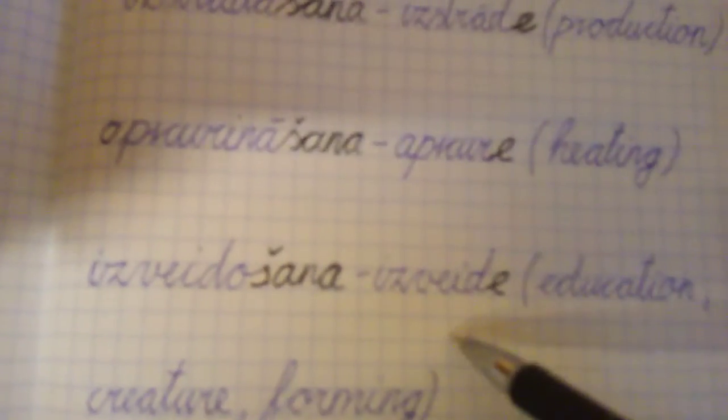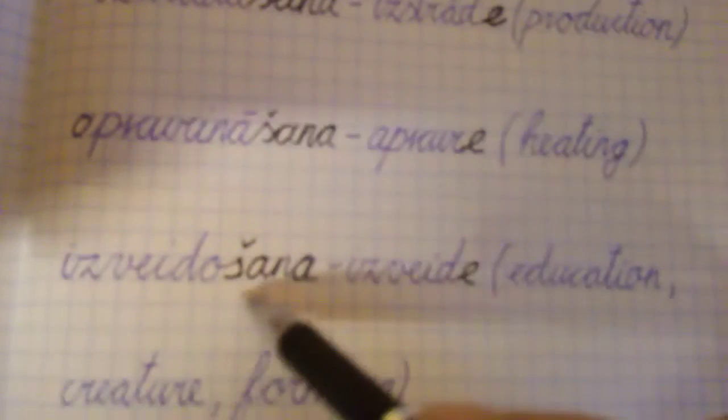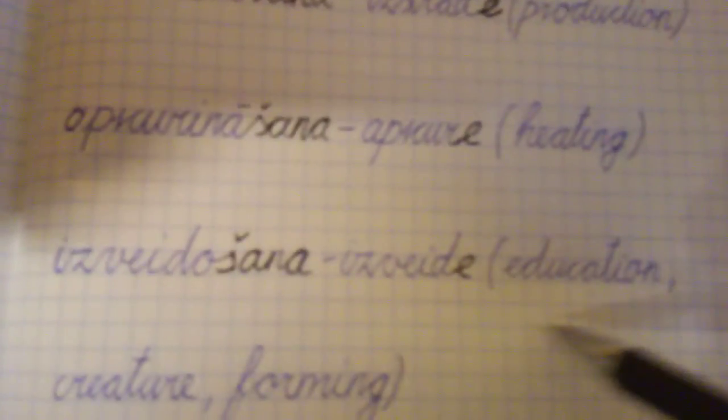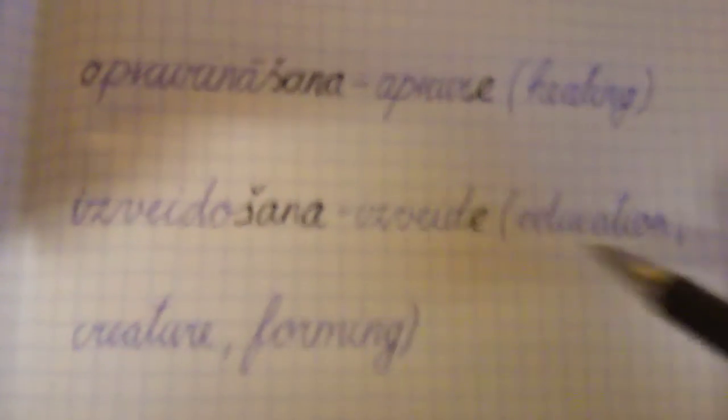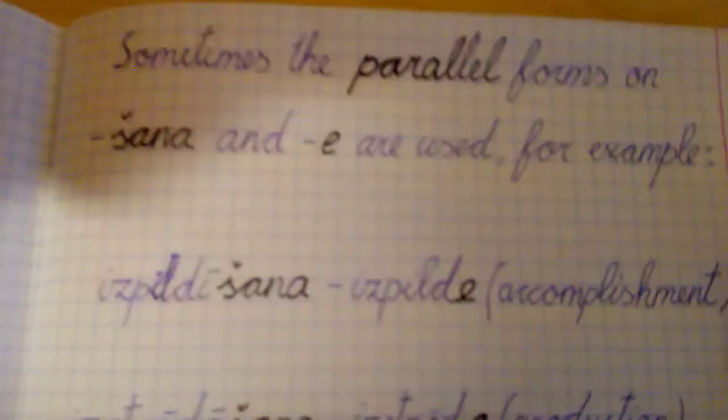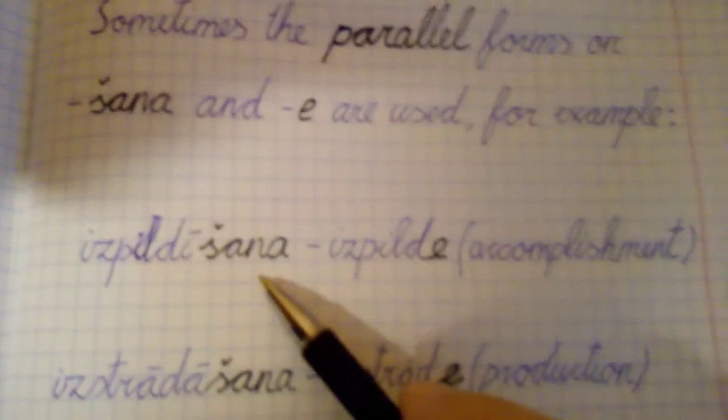And the last one is izveidošana. Izveidošana with -šana and -e endings means education, creature forming. So -šana and -e endings mean the same thing.